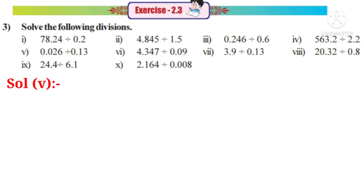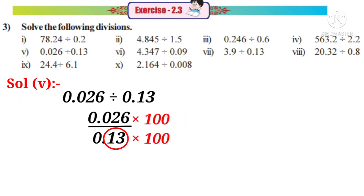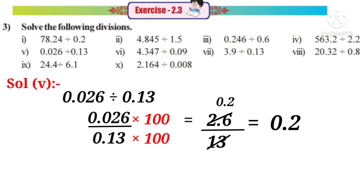Solution 5: 0.026 divided by 0.13, that means 0.026 by 0.13. Observe that there are 2 decimal places in the denominator. So we have to multiply with a number which has 2 zeros after 1, that is by 100. On multiplication, the decimal place will shift right side after two digits. So numerator becomes 2.6 by denominator becomes 13. On simplification by 13, the answer is 0.2.